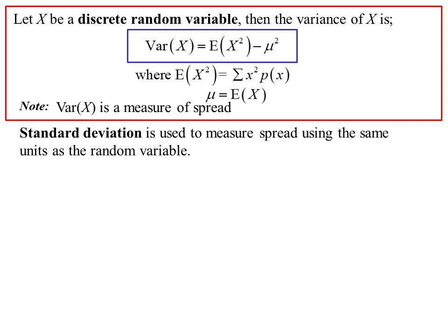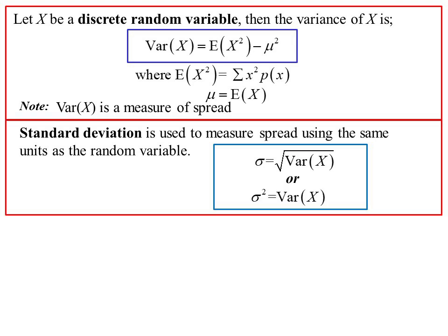Standard deviation brings the units right, because X² would have units squared. We need to bring it back to units, not units squared, so we find the square root of the variance to get standard deviation. Another way of saying this: σ² is the variance, which is why we use σ² to represent variance.